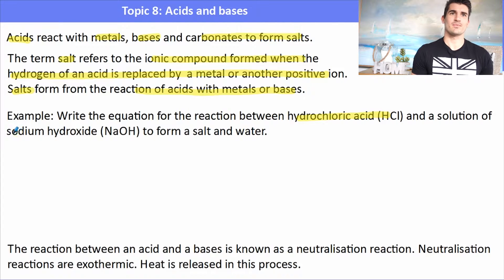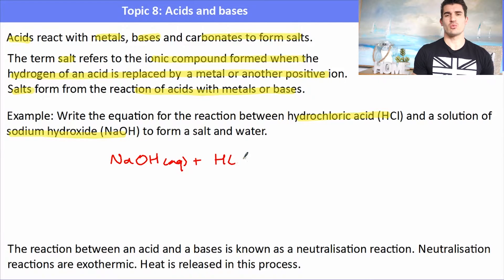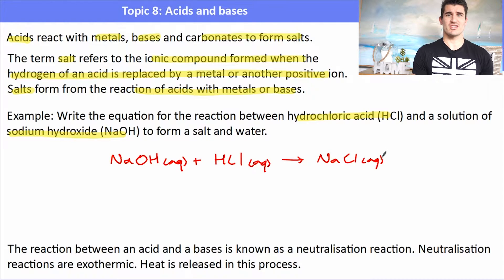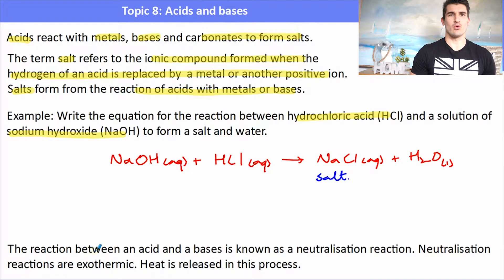For example, write the equation for the reaction between hydrochloric acid and sodium hydroxide to form a salt and water. We have NaOH reacting with HCl — an acid and a base — so we form a salt, which in this case is sodium chloride. Reacting sodium hydroxide and hydrochloric acid together forms that salt, and in the process we get water.